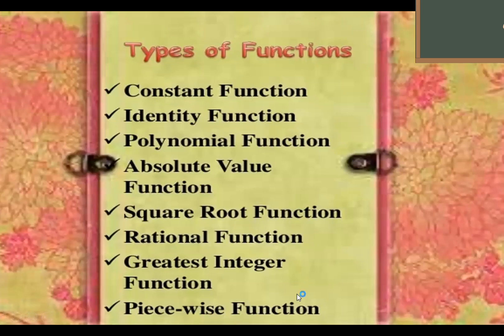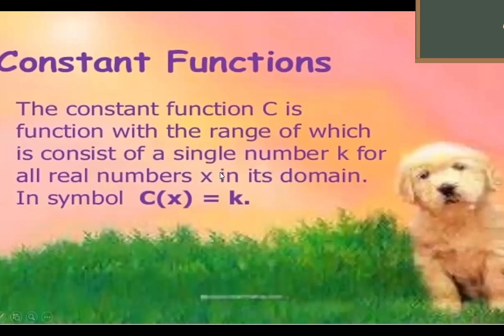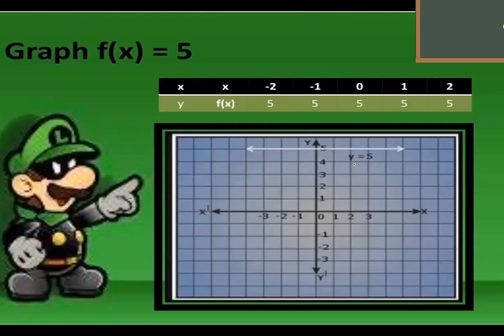We have constant function, identity function, polynomial function, absolute value function, square root function, rational, greatest integer function, and piecewise function. A constant function has a range which consists of a single number k. For example, y = 5 or f(x) = 5. Whatever the value of your x — negative 3, negative 2, negative 1 — your y is always 5. This is the graph of a constant function, y = 5.